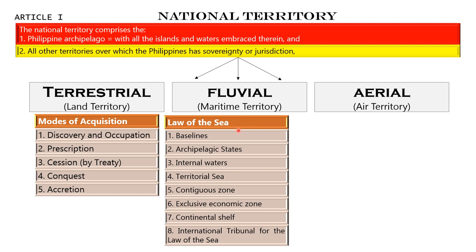The law of the sea — you have to study baseline, the archipelagic states, internal waters, the territorial sea (your 12 nautical miles), contiguous zone (your 24 nautical miles), your exclusive economic zone (the 200 nautical miles), continental shelf. This is frequently asked in bar exams.